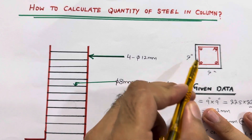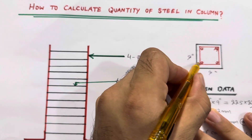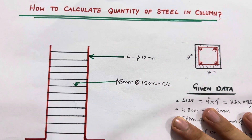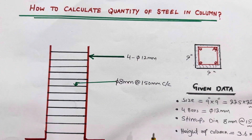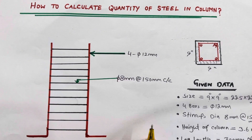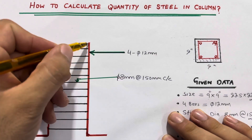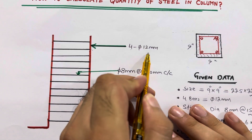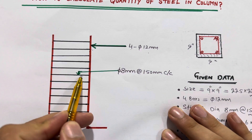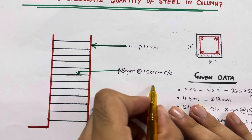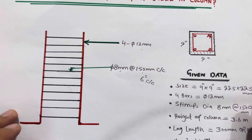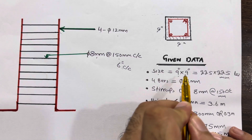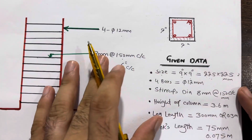For a 9 by 9 inch column, you can see the column with its concrete cover. Inside we have a ring, or lateral tie, and four numbers of steel rods. In the cross-section, the red lines show the steel reinforcement — four bars of 12 millimeter diameter. The lateral ties are 8 millimeter diameter with a spacing of 150 mm (6 inches) center to center. The column size is 225 mm by 225 mm.